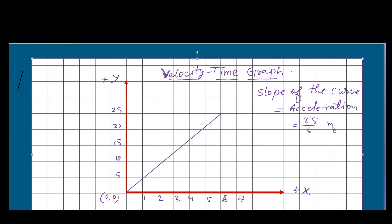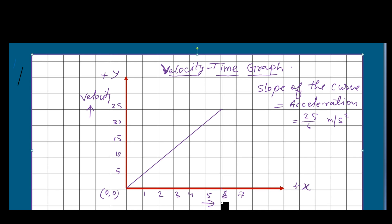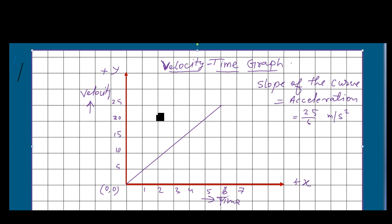The unit will be meters per second squared. Why? Because along the y-axis we are showing velocity and along the x-axis we are showing time. So velocity divided by time gives meters per second times one per second, which equals meters per second squared — and we know that the unit of acceleration is meters per second squared.